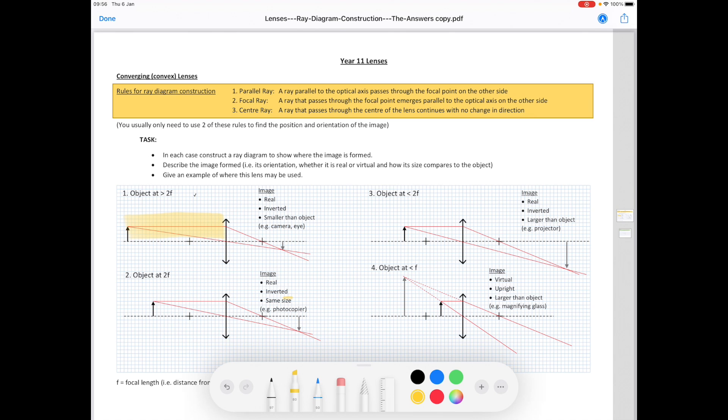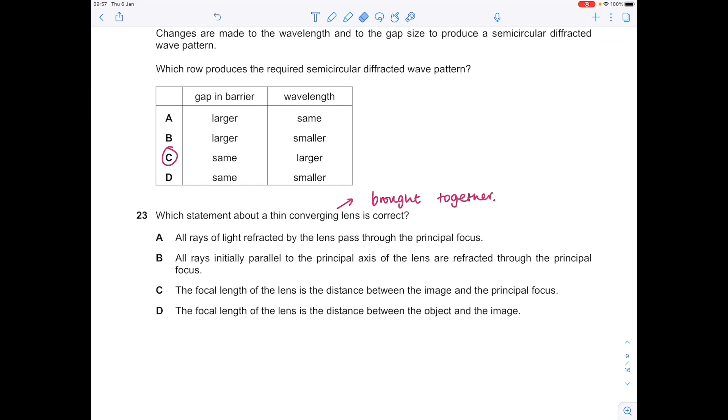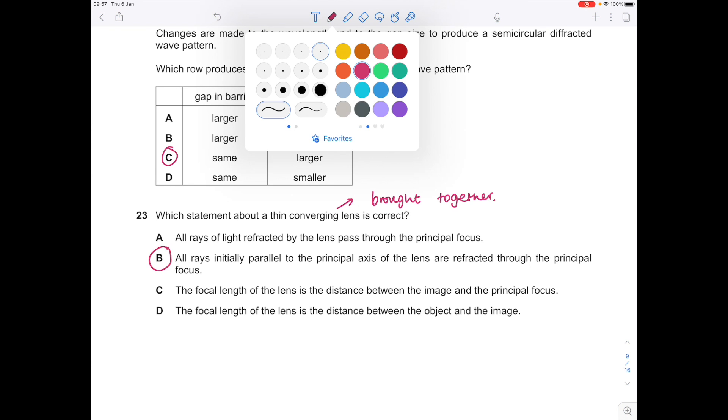If we use this picture to help us, you can see how these parallel rays up here, when they pass through the lens, they're refracted so that they go through the principal focus which is shown there.